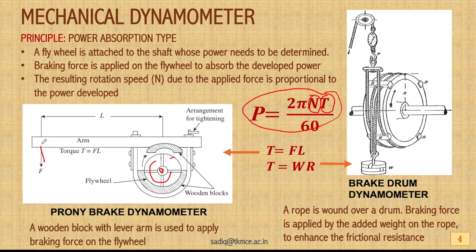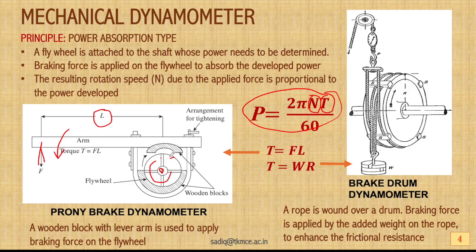When a particular force is applied on the arm at leverage distance L, the arm moves and the wooden block comes in contact with the flywheel, creating friction. Because of that friction, the rotation speed of the flywheel decreases. The reduced speed and the torque — which equals the applied force times the leverage distance L — allow us to compute the power.